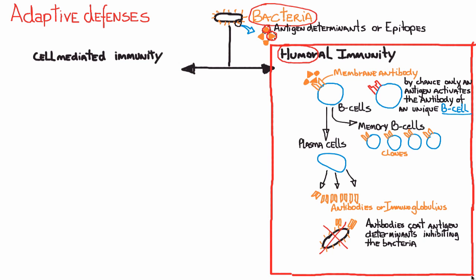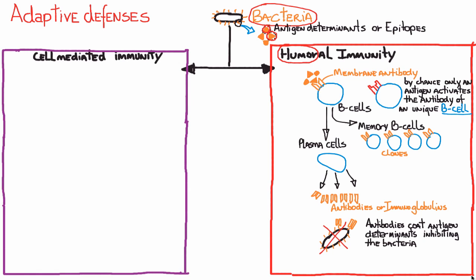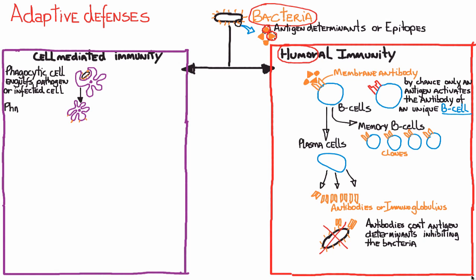Now let's move to cell-mediated immunity. As the name says, you depend on cells mediating the response — not antibodies floating in blood, but cells delivering the final punch to the infectious agent. In cell-mediated immunity, phagocytic cells can engulf the pathogen or an infected cell. Once they do, some of the antigens present in the bacteria are expressed on the membrane of that phagocytic cell.